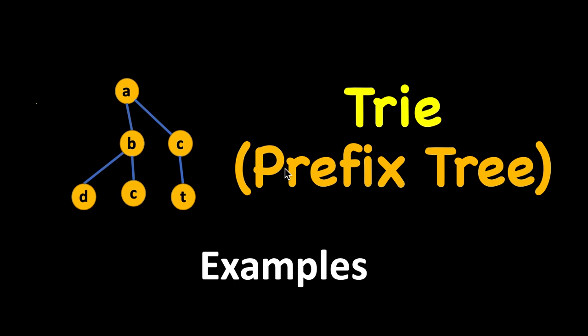In our previous video we had seen our trie data structure where we had implemented insert, search, and starts-with functionalities. We had inserted words into a trie, searched them, and also checked if some prefix is there in the trie or not. I realized I had not given enough examples there — the main goal was to have some brief understanding of this trie data structure. With that brief understanding and some limited examples we started coding in C++, Java, and Python. So this video is a supplement of that — it should be understood first before going to the implementation part.